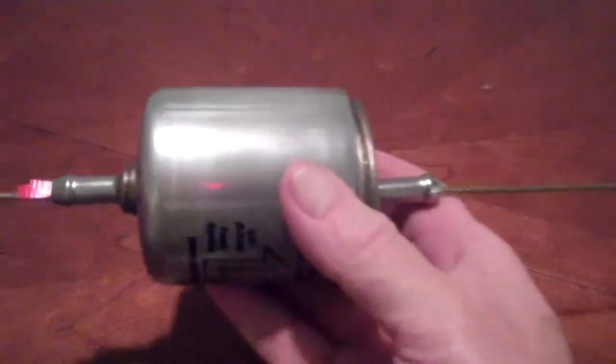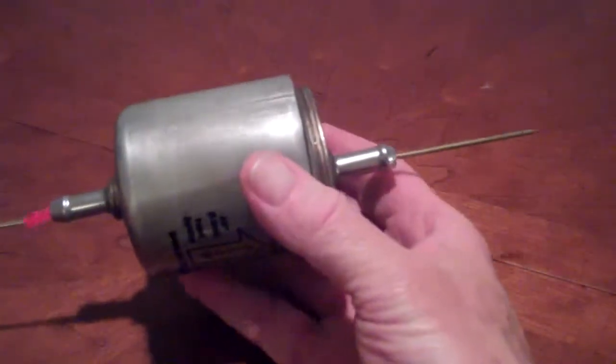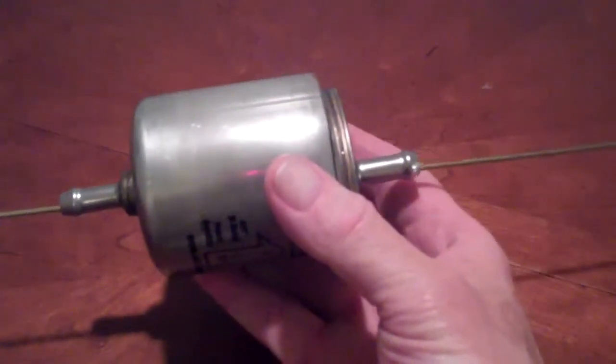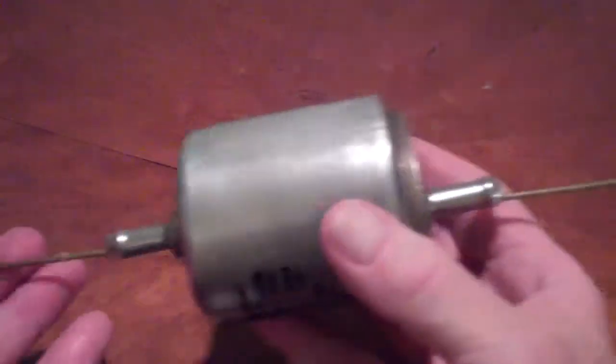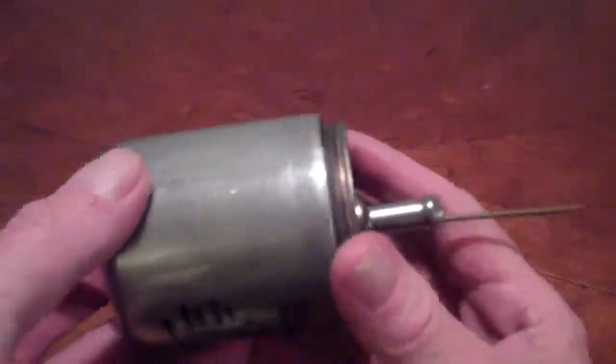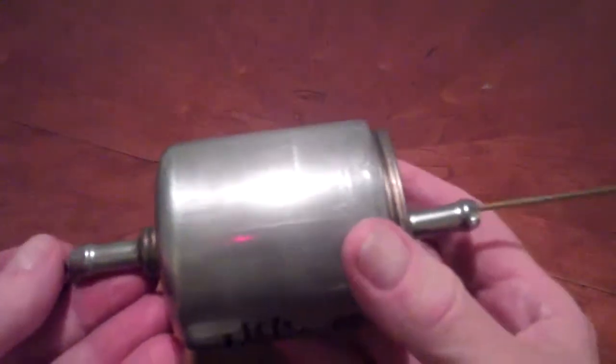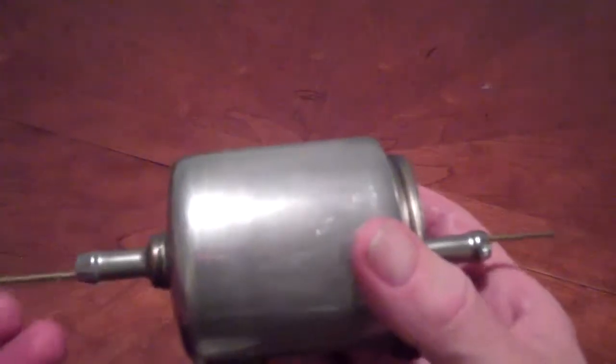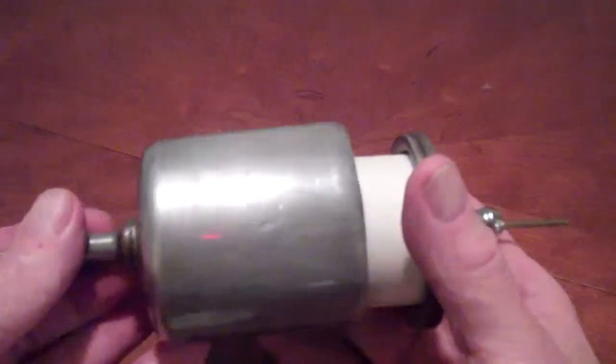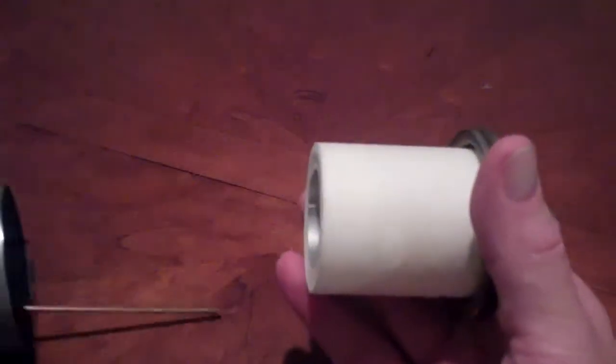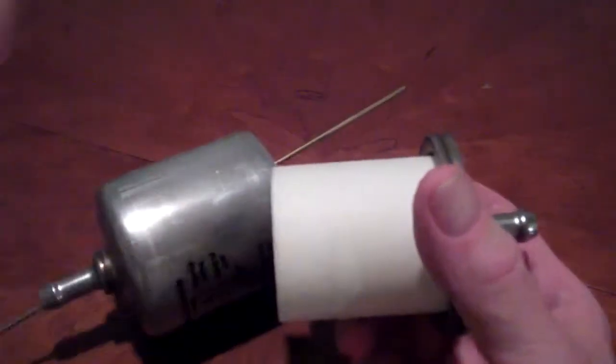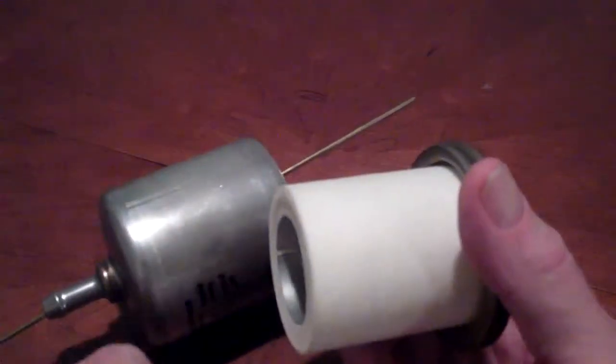So ninety percent of the fluid just goes right through the can without ever being filtered. That's how it filters down to two microns without restricting the fluid.